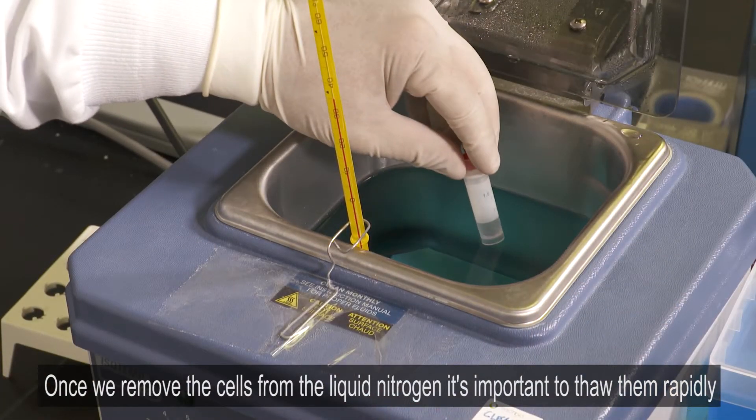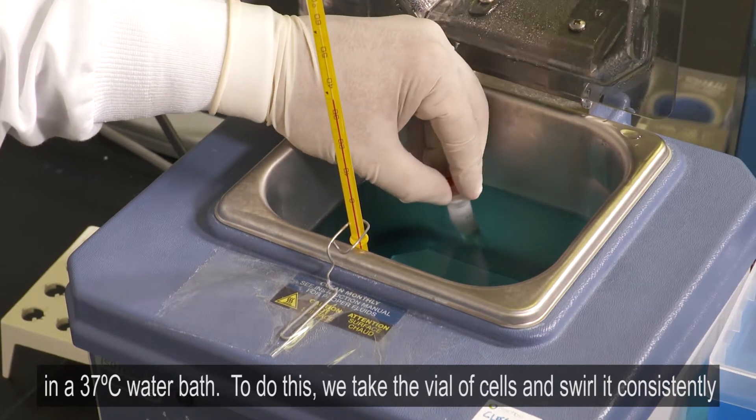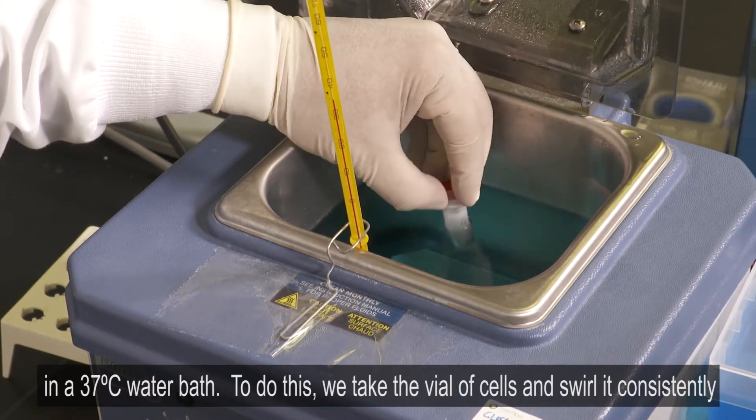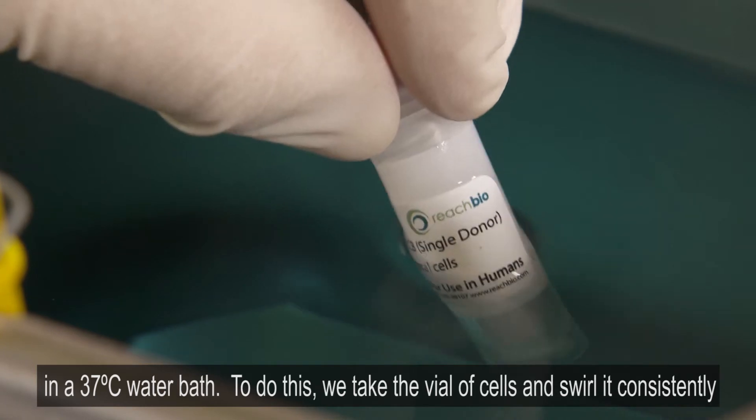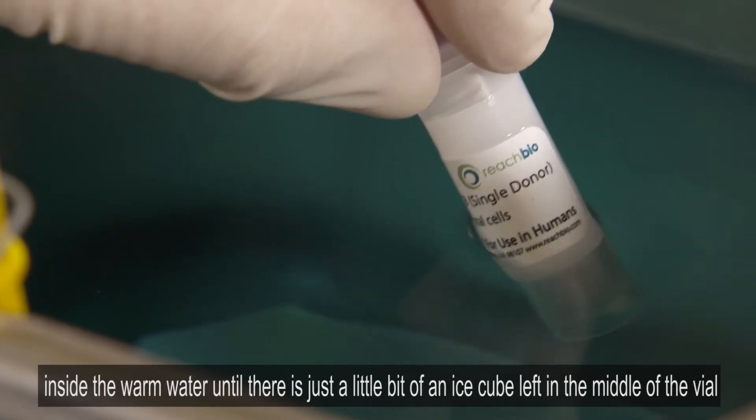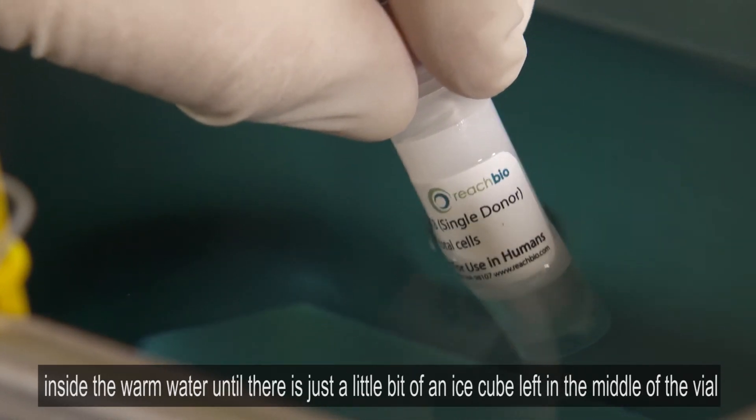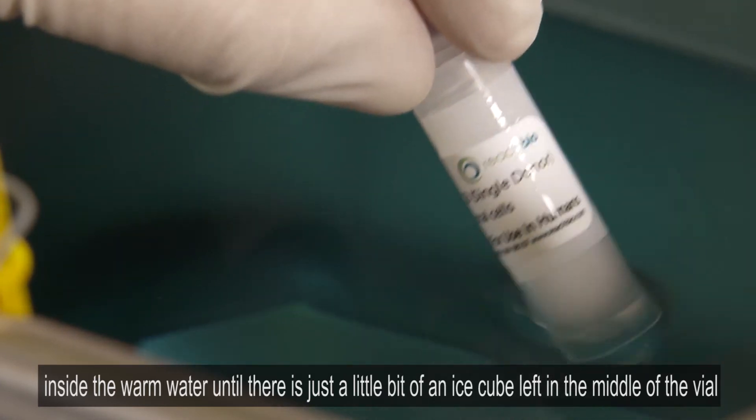Once we remove the cells from the liquid nitrogen, it's important to thaw them rapidly in a 37 degree Celsius water bath. To do this, we take the vial of cells and swirl it consistently inside the warm water until there is just a little bit of an ice cube left in the middle of the vial.